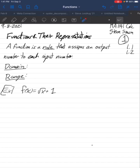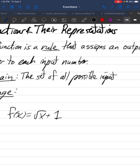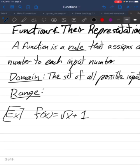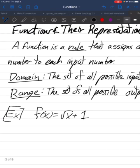So the basic starting point is a function is a rule that assigns an output number to each input number. Before I give an example, I just want to give some names to some of those things. The domain is what we call the set of all possible input numbers. All the things that you can apply the rule to is called the domain. All the things you can get out is called the range.